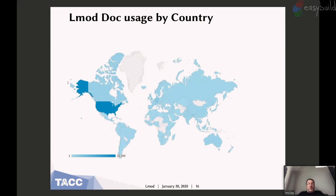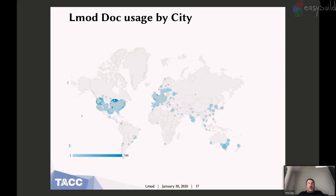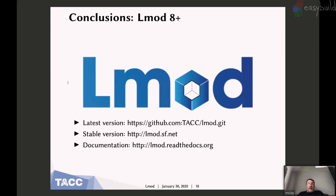I'm happy to say that Lmod is taking over the world. Kenneth showed me that you can use Read the Docs to track usage — in the past year, these are all the places in the world where someone has accessed the Lmod documentation. I don't have all of Africa, I don't quite have all of South America, and I don't have Mongolia. Readers of the Lmod documentation are concentrated in the US, Europe, and Australia, but it's doing all right. The latest version of Lmod can be found on GitHub at the TACC Lmod site. There's a stable version on SourceForge, and the documentation is at lmod.readthedocs.io.